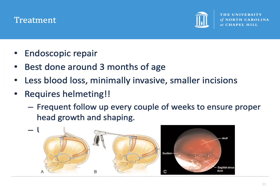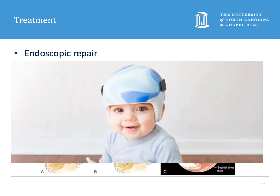Endoscopic repair is reserved for single suturectomies of sagittal or unicoronal synostosis. It is best done around three months of age but can be performed up to six months in rare cases. There is minimal blood loss and it is usually well tolerated with only one to two nights in the hospital. It requires 12 to 18 months of helmeting, 23 hours a day, with oftentimes weekly helmet checks. There is a socioeconomic consideration in choosing this repair, as it puts considerable responsibility and strain on the family for frequent visits and helmet and wound care.